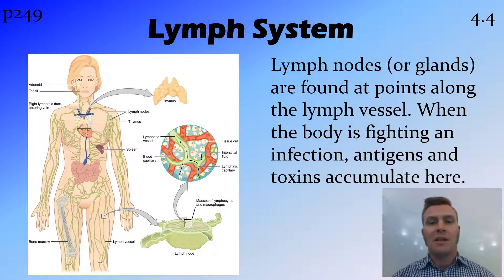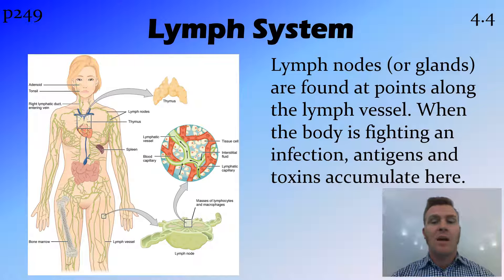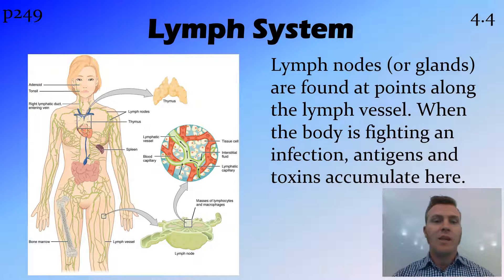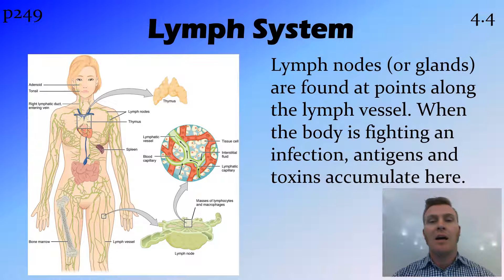Throughout the lymph system there are lymph nodes, or lymph glands, found at different points and involved in the body's fighting of infection. As things drain to them, they can accumulate toxins and may become red and sore. Some common locations are in the neck, where there are lots of lymph nodes, as well as under the armpits and in the groin. So when you're sick, you may feel these being sore and tender.